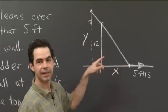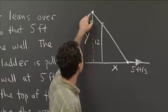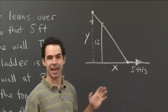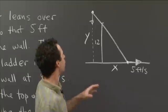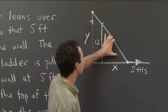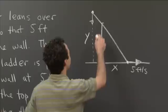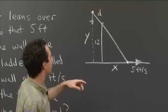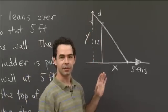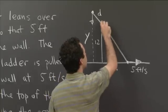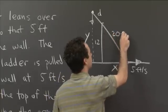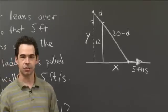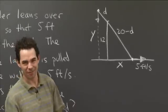The amount of ladder that extends over the wall is changing. I'll give that a variable name — let's call it d for distance. If this part is d, then because the whole ladder has length 20, the other segment has length 20 minus d. Those quantities describe all the possible lengths of interest in this picture.